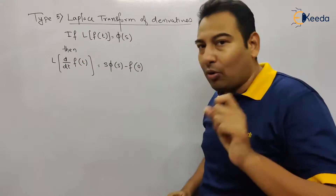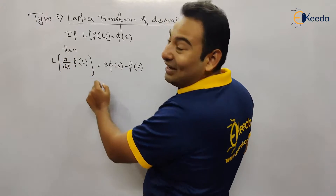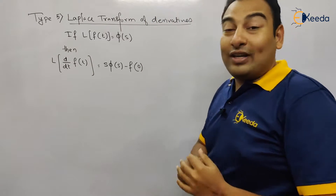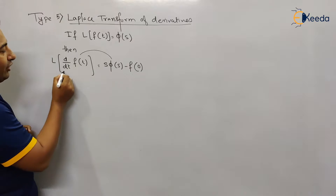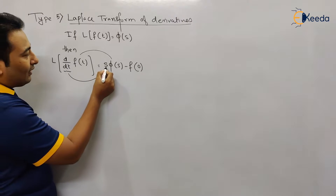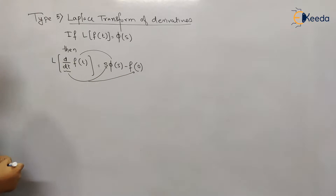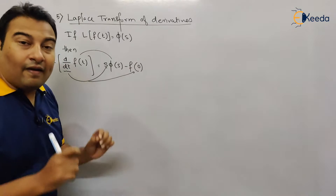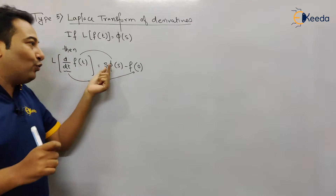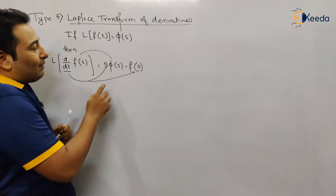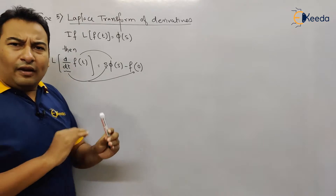Don't worry, it's very simple. When there is a derivative inside the Laplace transform, what needs to be done is: first find the Laplace transform of f(t), which is φ(s). Due to the d/dt, we multiply s with φ(s) and subtract f(0). Forget about the derivative part first — find the Laplace of f(t), that is φ(s), then multiply by s and subtract f(0).